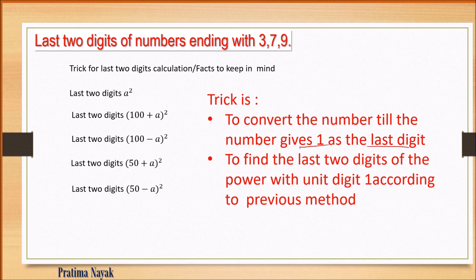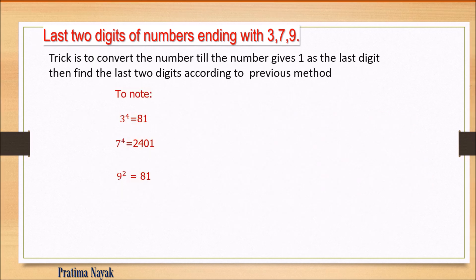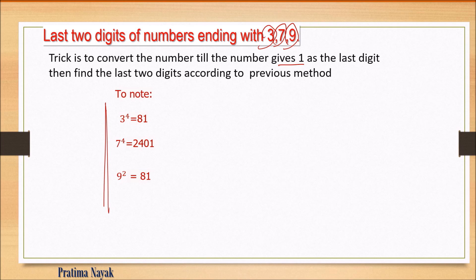The trick is to keep converting until the number gives 1 as the last digit. After getting unit digit 1, we follow the same procedure as for numbers ending in 1. Key facts: 3 raised to the power 4 is 81, so it ends in 1. For 7: 7 to the power 4 ends in 01. For 9: 9 squared is 81, so 9 to the power 2 ends in 81.